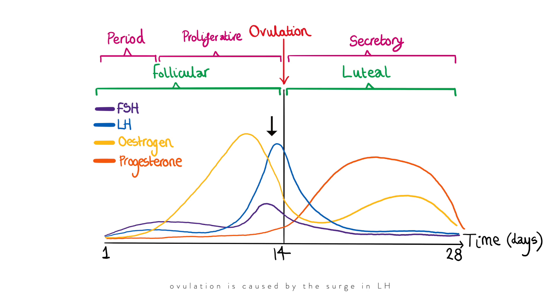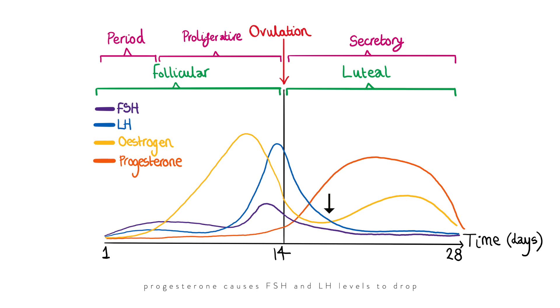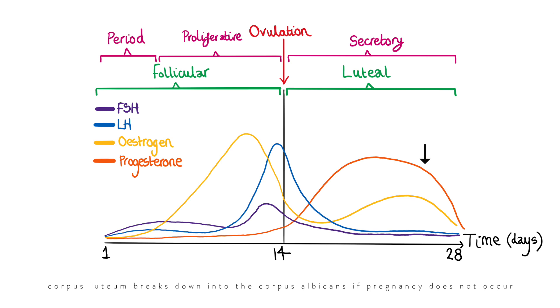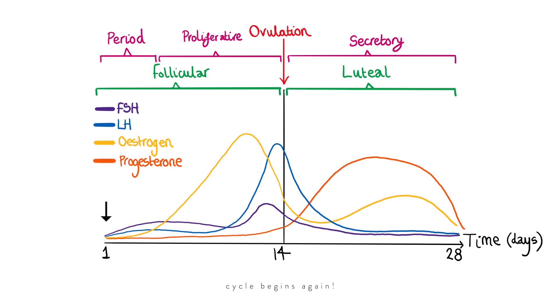That dominant follicle releases a surge of estrogen, setting up a positive feedback loop causing a peak in FSH and LH. The LH peak in particular drives ovulation — the release of the oocyte from the dominant follicle. The follicle breaks down into the corpus luteum, and progesterone levels rise. Progesterone sets up a negative feedback loop decreasing FSH and LH, while also maintaining the endometrial lining for potential pregnancy for 10 to 12 days. If pregnancy doesn't occur, the corpus luteum breaks down, progesterone declines, FSH and LH rise again, and the next cycle begins with menstruation.